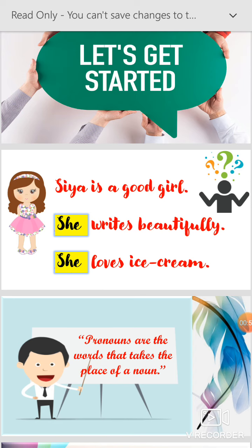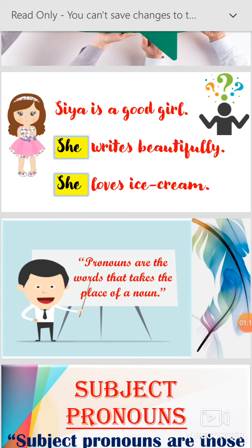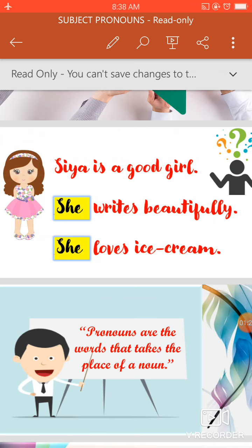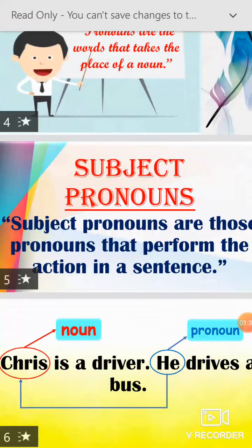In place of Sia, in the second sentence we are going to use 'she' — 'She writes beautifully.' The word 'she' is used in place of the noun Sia, so here 'she' is a pronoun. The definition of a pronoun is: pronouns are words that take the place of a noun. That's why in place of Sia we are using 'she.' She loves ice cream.